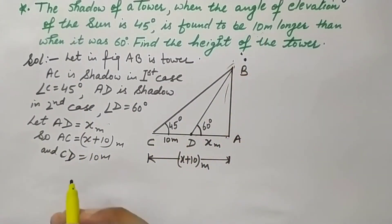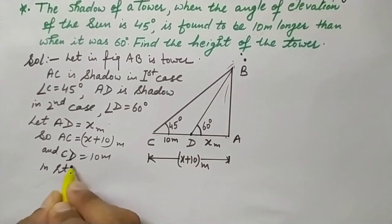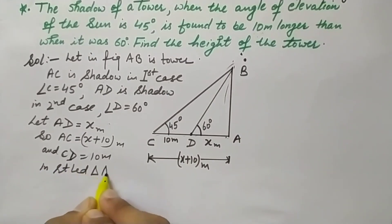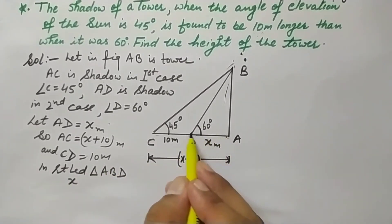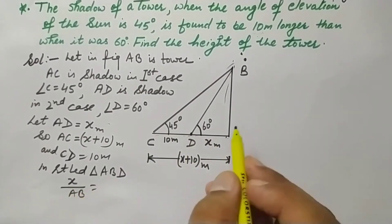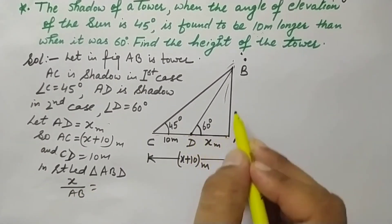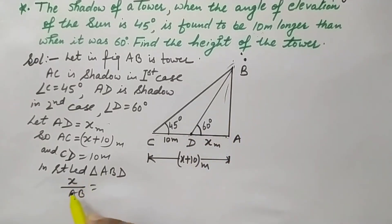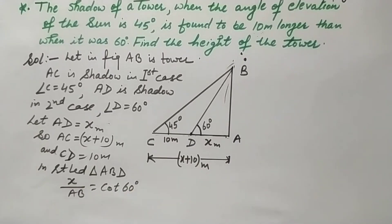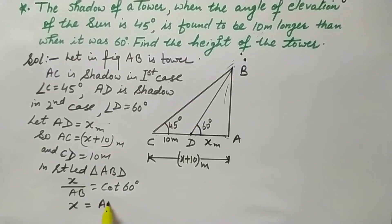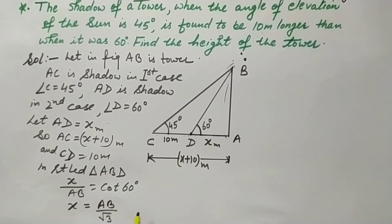In right-angled triangle ABD, AD over AB equals base over perpendicular, which is cot 60 degrees. So X over AB equals cot 60. Cross multiplying, X equals AB times cot 60. Since cot 60 is 1 over root 3, we get X equals AB over root 3. This is equation number 1.